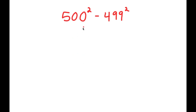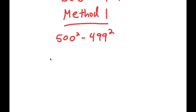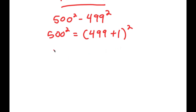In this problem I have 500 squared minus 499 squared, and I have two methods to solve this. For Method 1, I start by rewriting this expression, and first I'm going to rewrite 500 squared — so 500 squared is the same thing as 499 plus 1 squared.